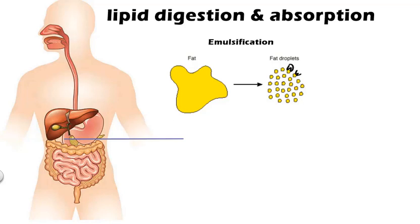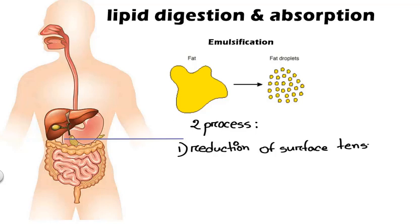Fat particles are so large that enzymes can't effectively work on them. So, by emulsification, large fat globules are broken down into smaller particles which increase their surface area so that enzymes can effectively work on them. The emulsification of fat is done in two processes: by reduction of surface tension by bile salts and lecithin and by peristaltic movement of the small intestine.